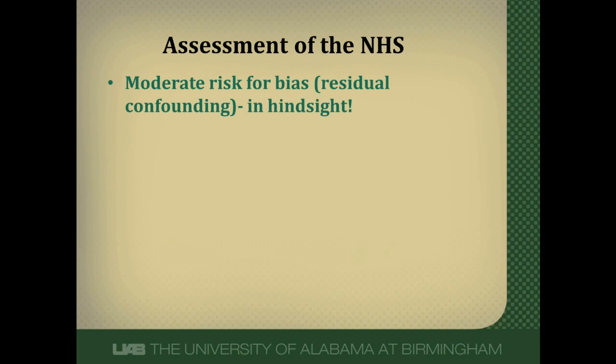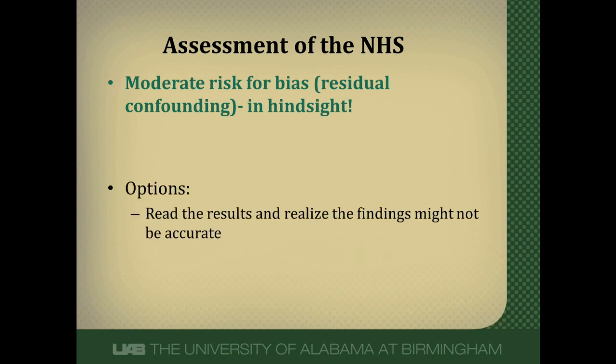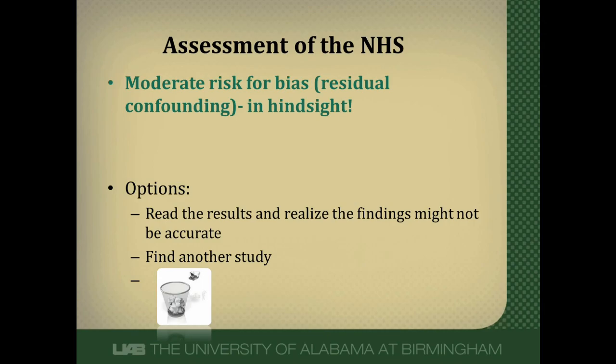In hindsight, the Nurses' Health Study was really at risk for residual confounding. We didn't know this at the time — we thought it gave a very robust answer because it was a well-designed study — but in hindsight there probably was residual confounding. If a study has some bias, there are three things you can do: read the results and adjust for the known bias in your interpretation; find another study to compare answers; or, if a study is so biased and nothing else is available, discard it and wait for a new study to be done.